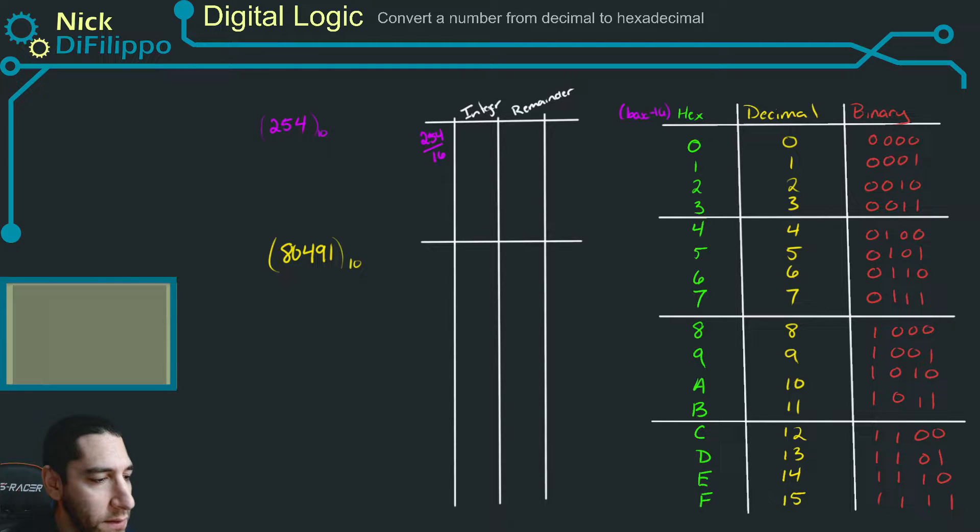And so 254 divided by 16 is going to be equal to 15.875. So the integer is going to be equal to 15. The remainder is also really important, and you can always figure out the remainder by doing 16 times what the whole number is. So 15 and subtracting those two numbers. So 254 minus 240, and we get a remainder of 14.